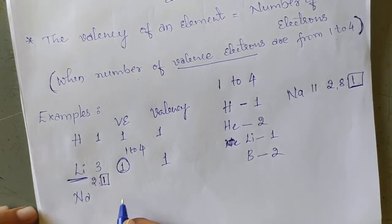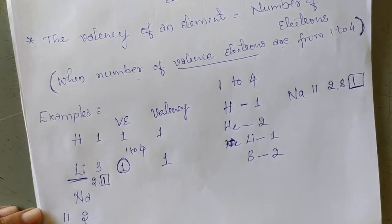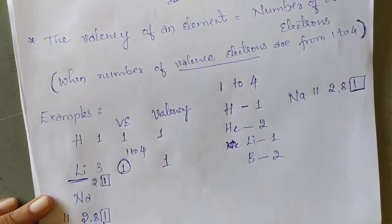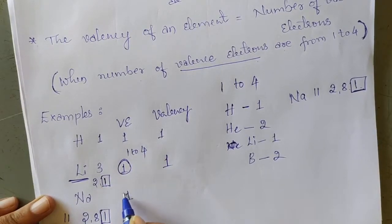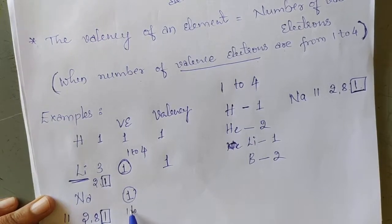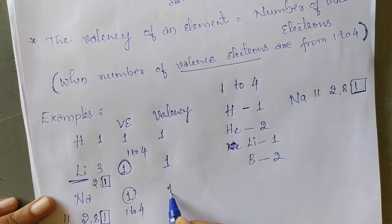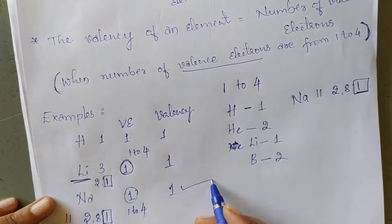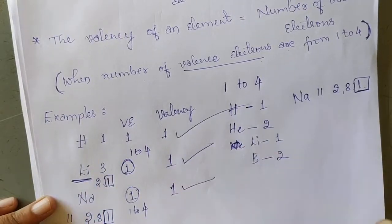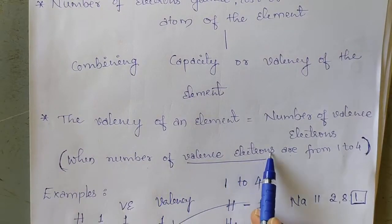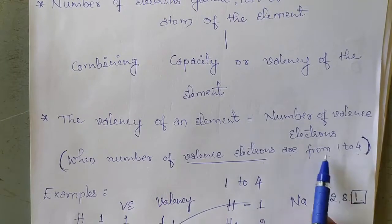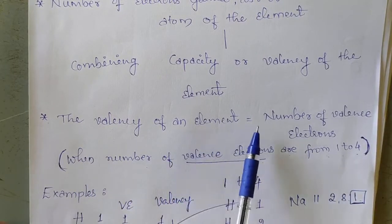The combining capacity of sodium is 1, that of lithium is 1, and that of hydrogen is 1. So in case of elements when the number of valence electrons are from 1 to 4, the valency of an element is always equal to the number of valence electrons.